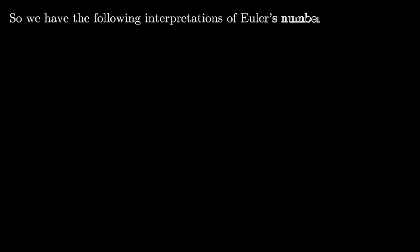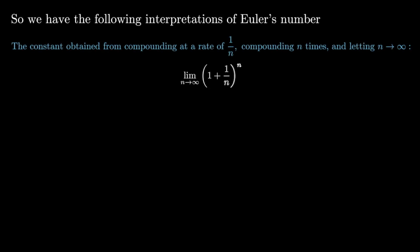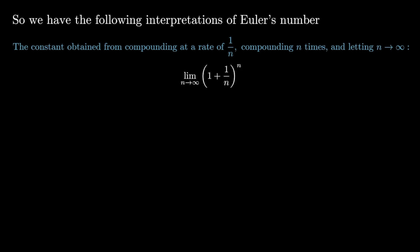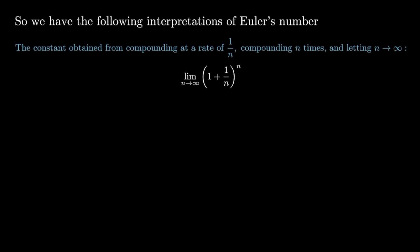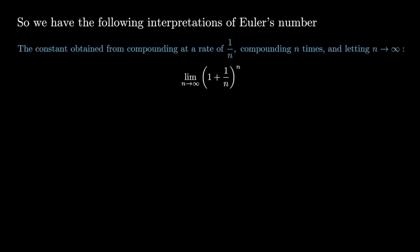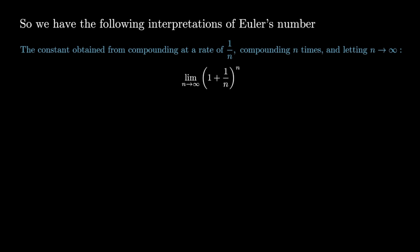We have the following interpretations of Euler's number. Euler's number, as we first defined it, was the constant obtained by compounding at a rate of 1 over n, compounding n times, and then letting n go to infinity. So it's exactly the number that you get as the limit as n tends towards infinity of 1 plus 1 over n to the power of n.